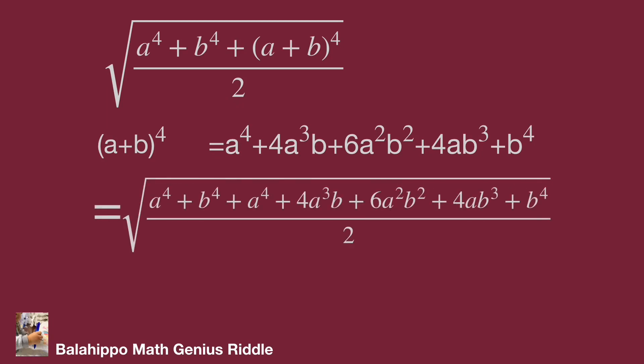In the new equations, there are 2a^4 and 2b^4, and the other items are 4a^3b + 6a^2b^2 + 4ab^3 divided by 2. Then we have square root of (a^4 + b^4 + 2a^3b + 3a^2b^2 + 2ab^3).